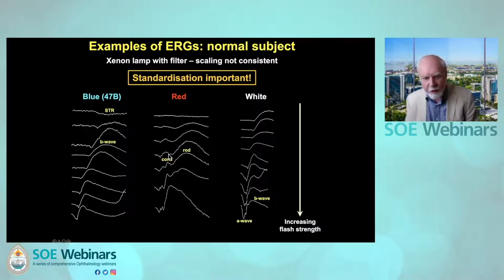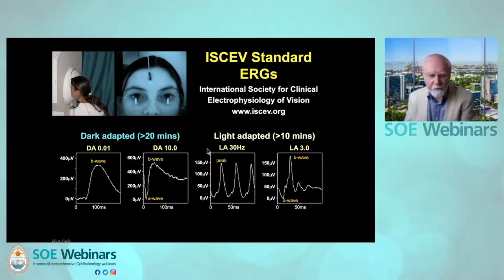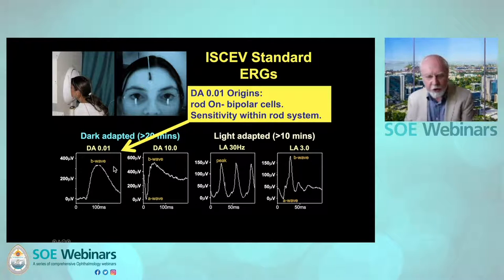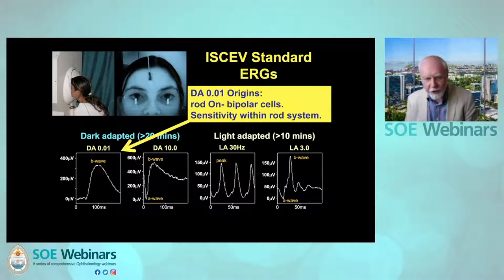Note that with a red stimulus under dark adaptation, there's an early component from the cone system and a late component from the rod system. These are the four main ERGs mandated by the International Society for Clinical Electrophysiology of Vision. We start off with a dim flash in the Ganzfeld in a dark-adapted eye. DA is dark adapted, LA is light adapted. 0.01 is a dim flash, 10 is a bright flash. With a dim flash in a dark-adapted eye, we get a response known as a B wave, which arises in the on-bipolar cells of the rod system, and arising at an inner retinal level gives sensitivity but not specificity.